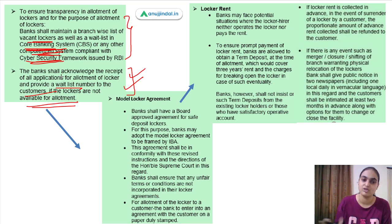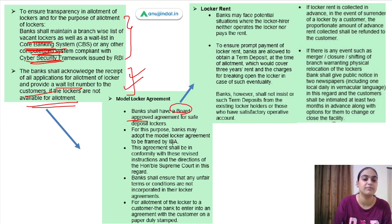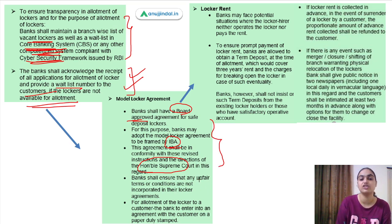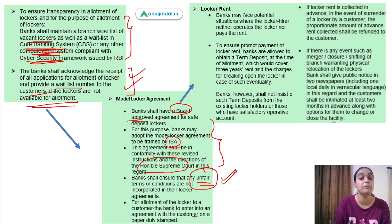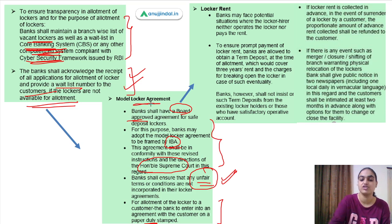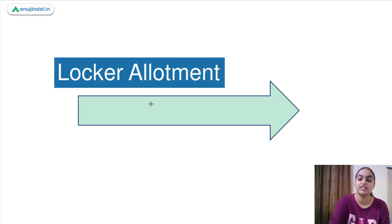The next set relates to the model locker agreement. Banks need to have a board-approved agreement for safe deposit lockers, drafted as per the Indian Banking Association's model and Supreme Court directions. The agreement should contain no unfair terms and conditions, and the locker agreement must be made on paper duly stamped.